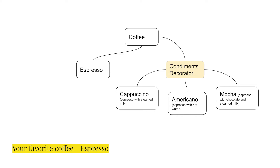In this example, we have a coffee component — it can be an abstract class or an interface — and each can be used on its own or wrapped by a decorator. Espresso is the concrete implementation of our coffee component. We also have an abstract or interface condiments decorator, and below it are the concrete implementations like cappuccino, americano, and mocha.